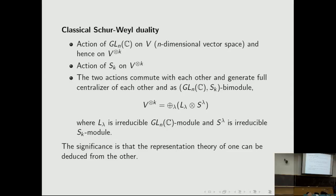The general linear group of transformations from C^N to C^N acts on the N-dimensional complex vector space V in a natural way. This action can be diagonally extended to the k-fold tensor product of V. The symmetry group on k letters acts on this k-fold tensor product by permuting the coordinates. These two actions commute with each other and they generate the full centralizers of their respective actions on V^{⊗k}.